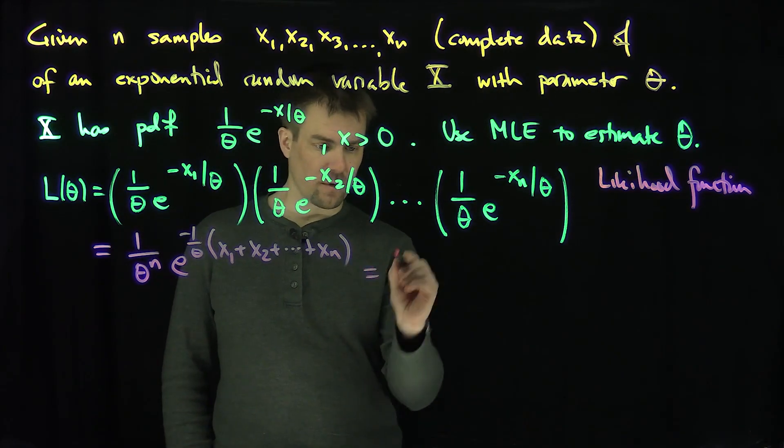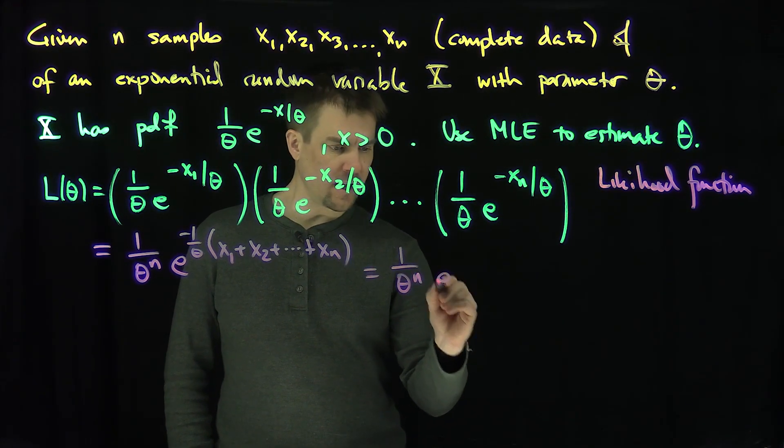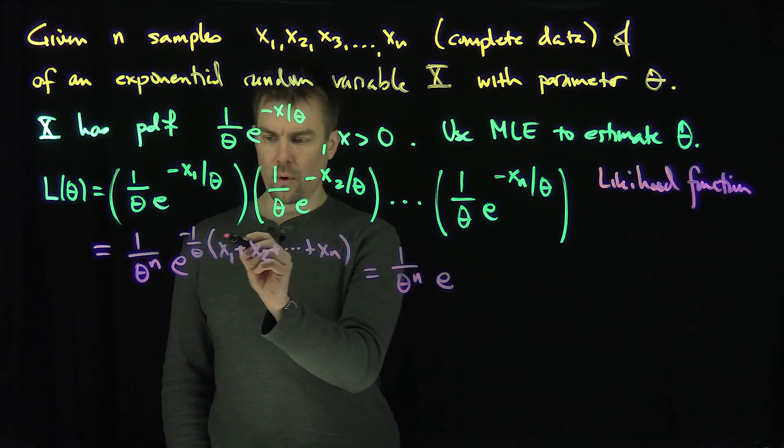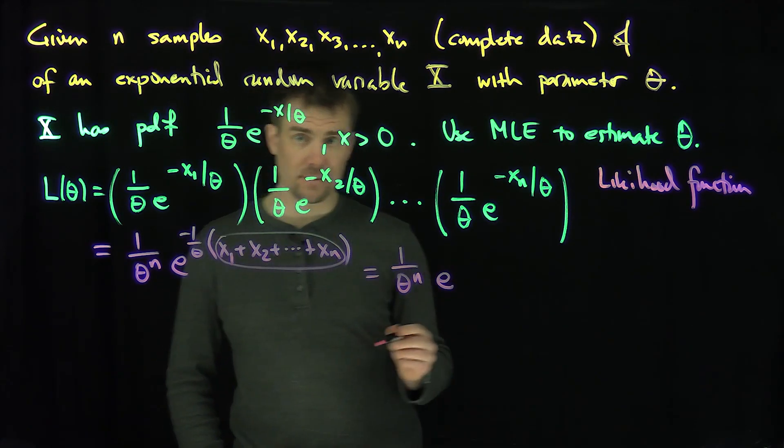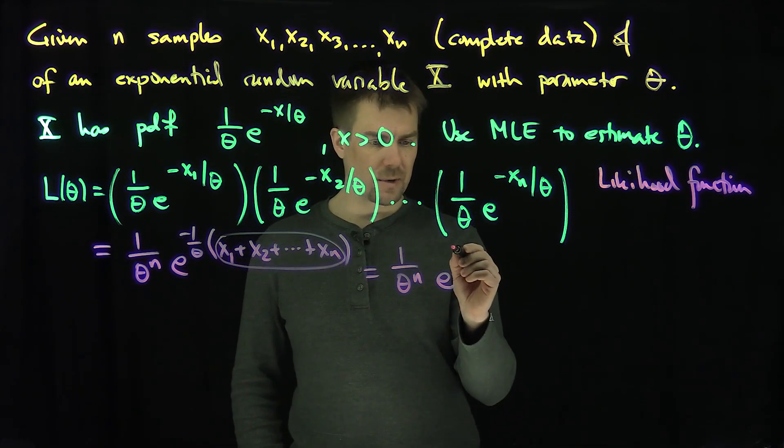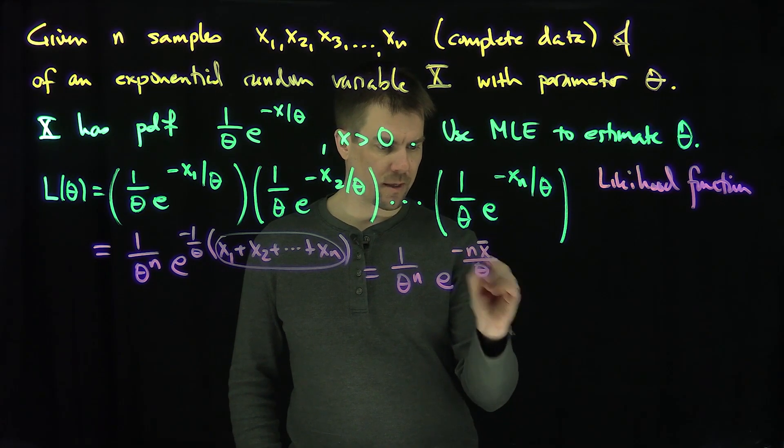That's exactly equal to 1 over theta to the n, and then e to the negative. Now, this, of course, is n times x bar, n times the sample mean of those data points. So this is going to be negative n x bar over theta.